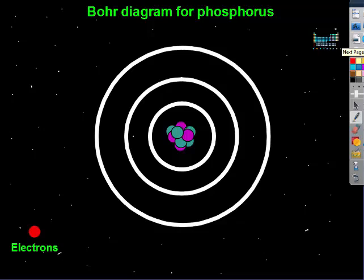Remember when we did Bohr diagrams for our elements. To do the Bohr diagram for phosphorus, first we need to figure out how many electrons it has.